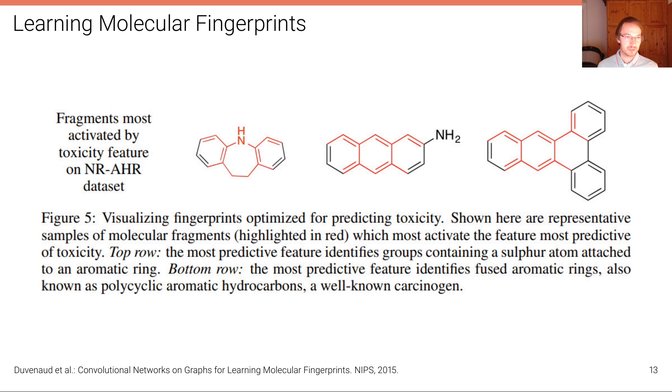We've mentioned it before: learning molecular fingerprints is another important application for graph neural networks due to the inherent graph structure of molecules. In this case here, for instance, this is from the paper here at the bottom from Duvenaud et al., Convolutional Networks on Graphs for Learning Molecular Fingerprints from NIPS 2015. The goal was in this particular experiment to predict toxicity for molecules, and so this is naturally formulated in the graph language.